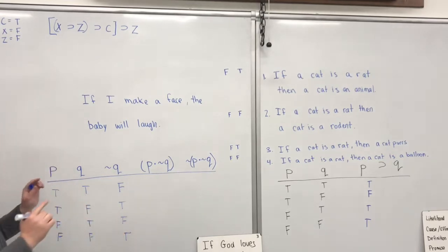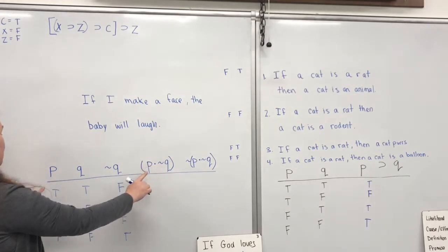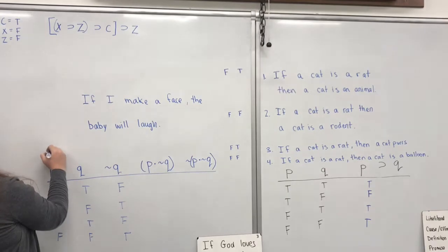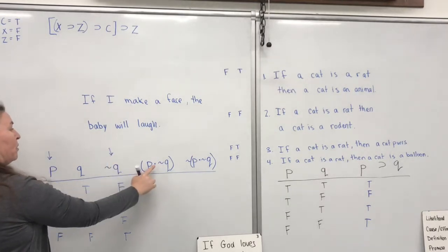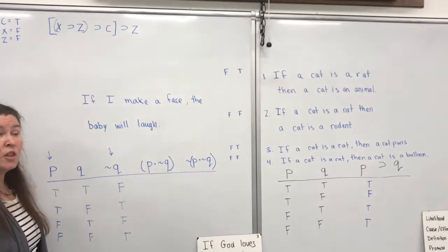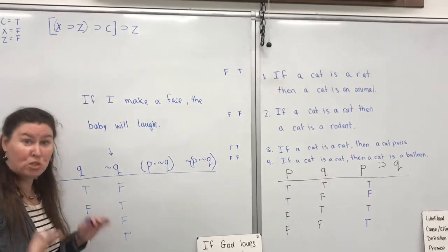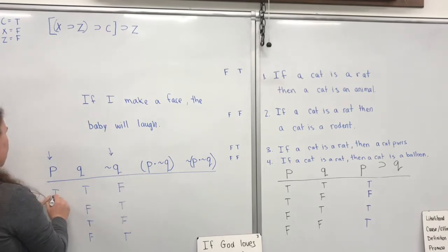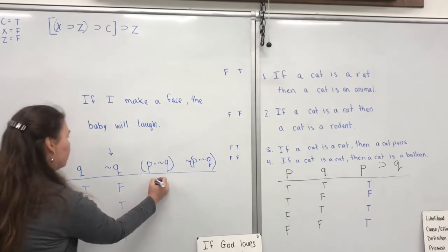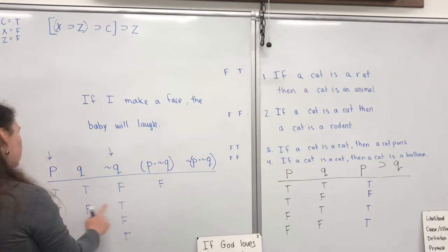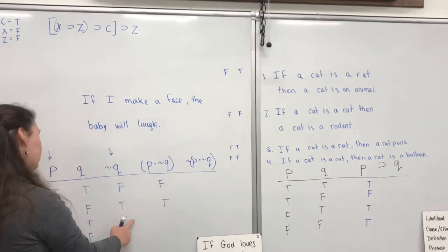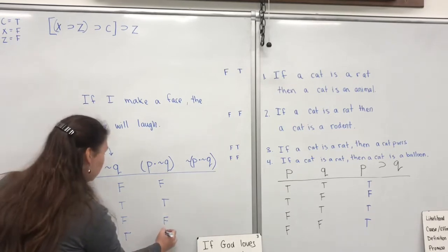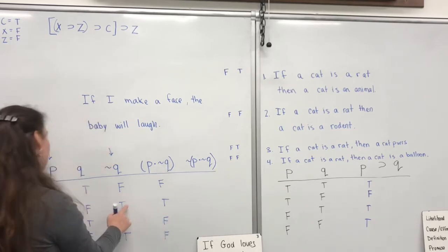Now I'm doing the conjunction part. I need to choose my P value and my negated Q value. For the conjunction, the only way for it to be true is if both sides are true. So: true and false — fails. True and true — it's true. False and false — it is false. False and true — still false. Both have to be true for the conjunction to be true.